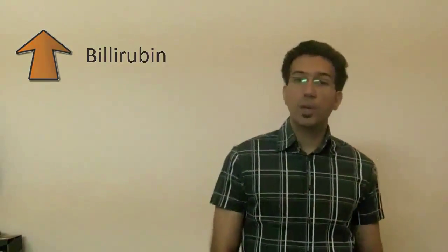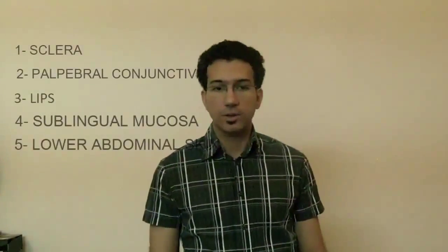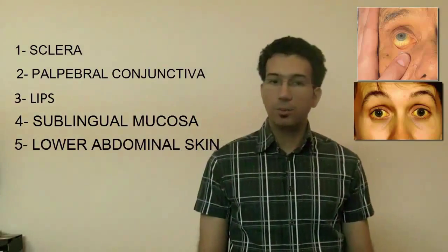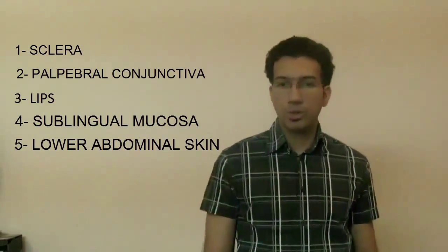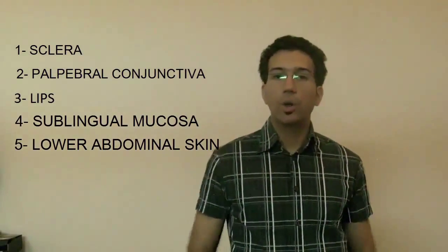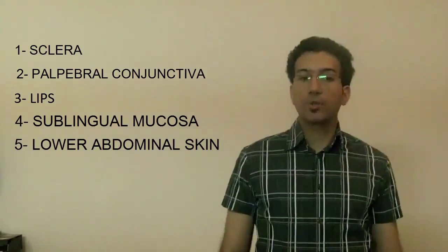Where can we look for Jaundice? Look for Jaundice in the sclera, palpebral conjunctiva, the lips, sublingual mucosa, lower abdominal skin. Artificial light often distorts colors and masks Jaundice.